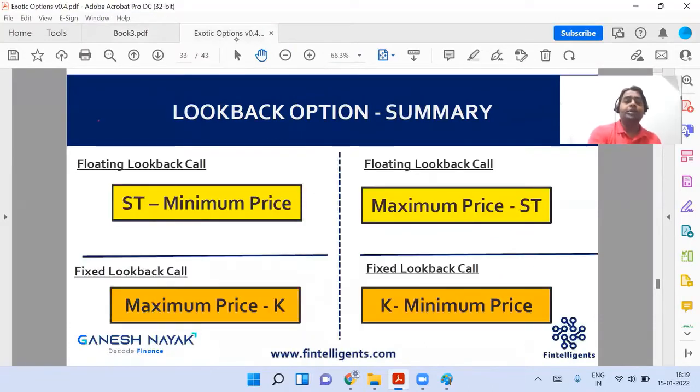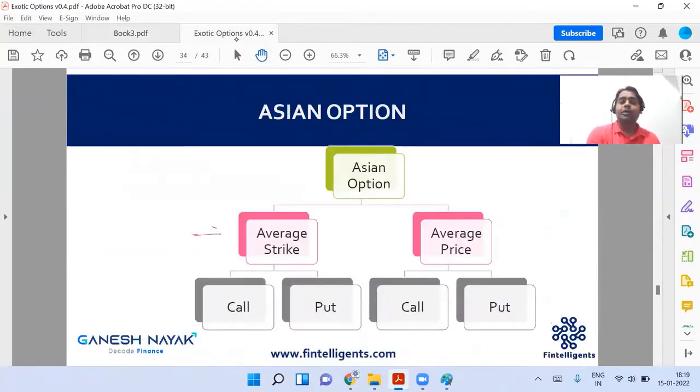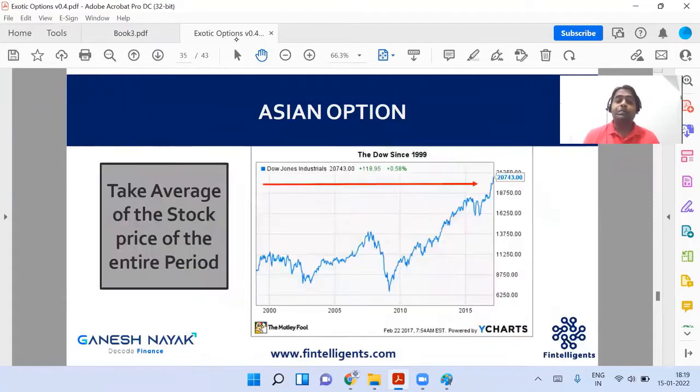Okay, this is the entire summary, summarizing both the parts. But look at the Asian option now. It has two parts: average strike and average price. You can remember from this word itself - the average price, where and what is the average price? Average price of the asset. See, the asset is moving up and down, right?